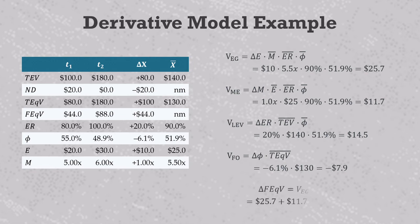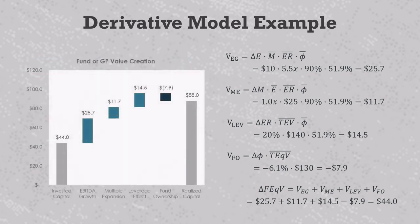And when you add these four value drivers up, you get value creation of 44, which is exactly the change in fund level equity value you see in the table above. Here's the value bridge in graphical form, and you can find the Excel model for this on the website.